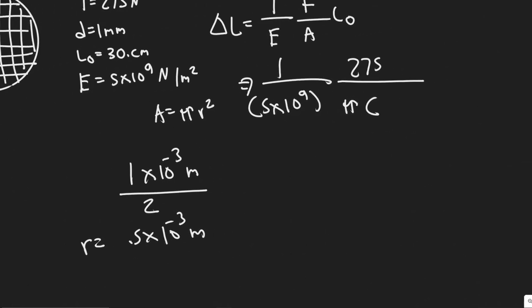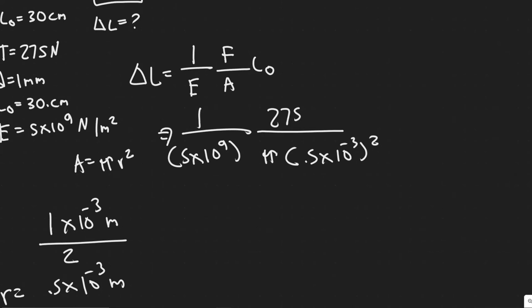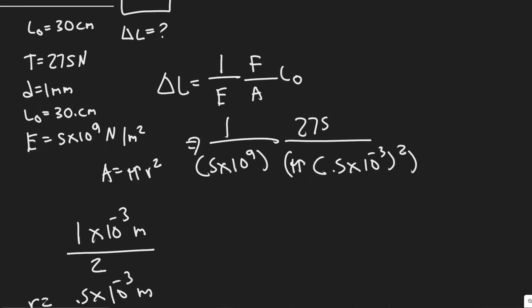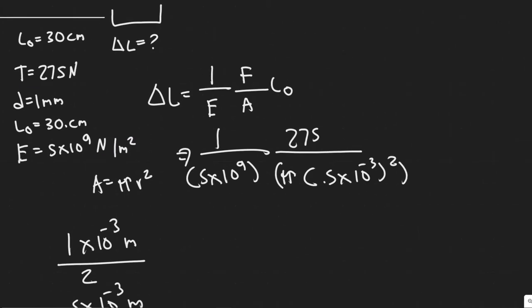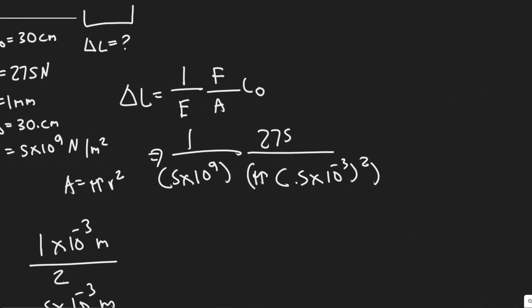All we do is divide the radius by 2. So 0.5 times 10 to the minus 3 squared. That is our area now. So let me put that in parentheses. And then our initial length, since everything else is in meters, we want to keep this in meters. So 30 centimeters, to convert that into meters, it's just 0.3.